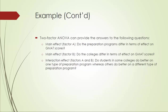With two-factor ANOVA, we can answer the following questions. First, the main effect with respect to factor A: do the preparation programs differ in terms of effect on GMAT scores? Second, the main effect from factor B: do the colleges differ in terms of effect on GMAT scores? And finally, we can investigate the interaction effect from both factors A and B: do students in some colleges do better on one type of preparation program, whereas others do better on a different type?